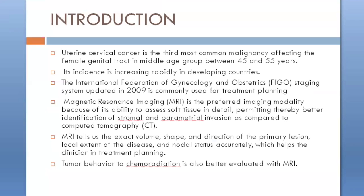Uterine cervical cancer is the third most common malignancy affecting the female genital tract in the middle age group between 45 and 55 years. Its incidence is increasing rapidly in developing countries. The FIGO staging system, updated in 2009, is commonly used for treatment planning. MRI is the preferred imaging modality because of its ability to assess soft tissue in detail, permitting identification of stromal and parametrial invasion as compared to CT.